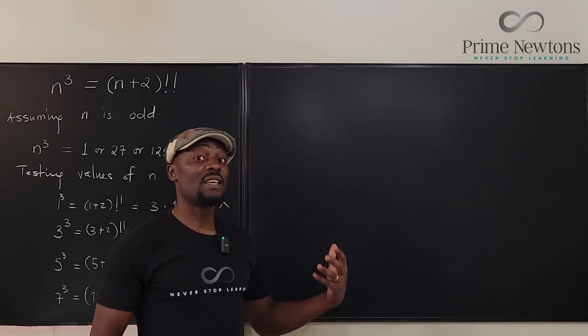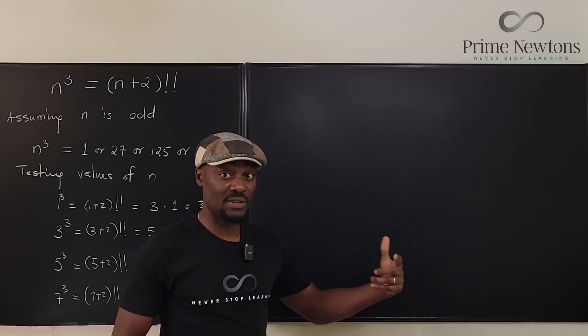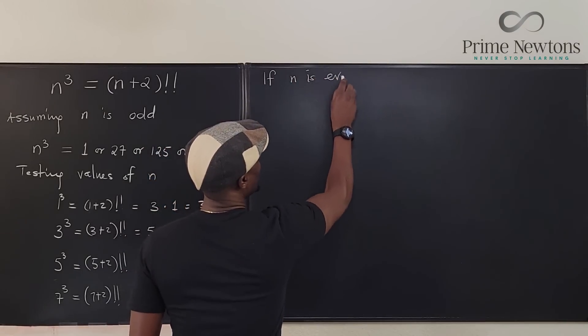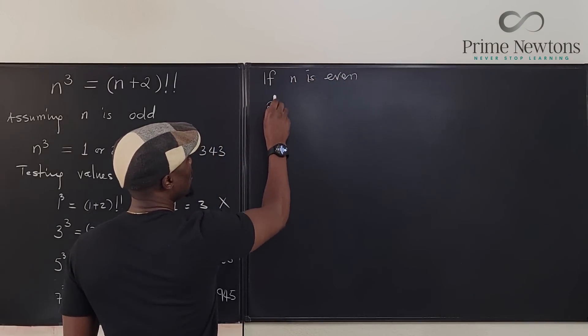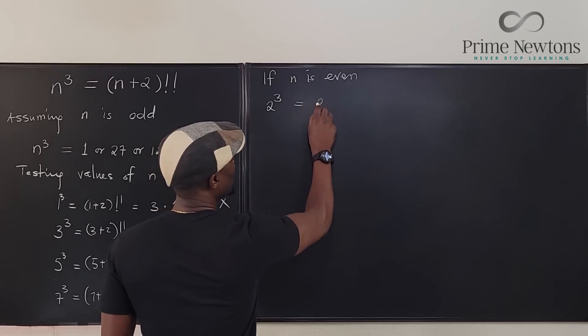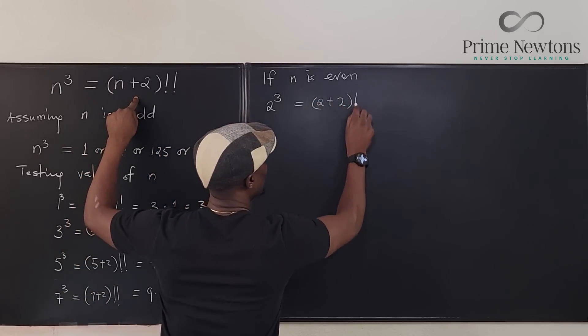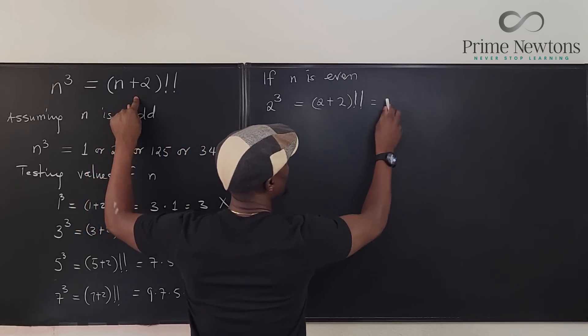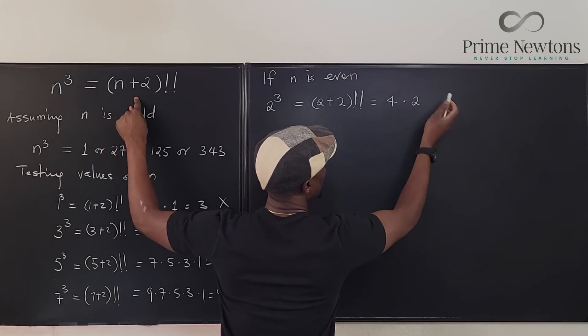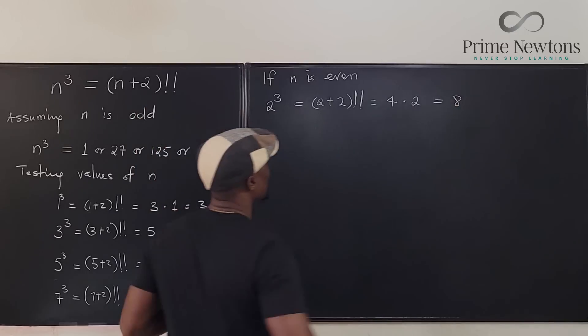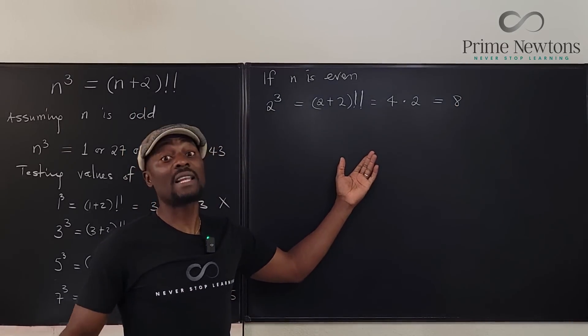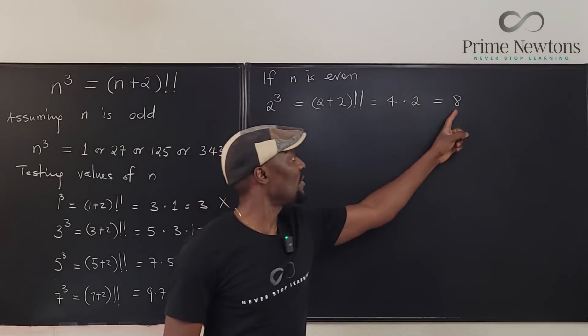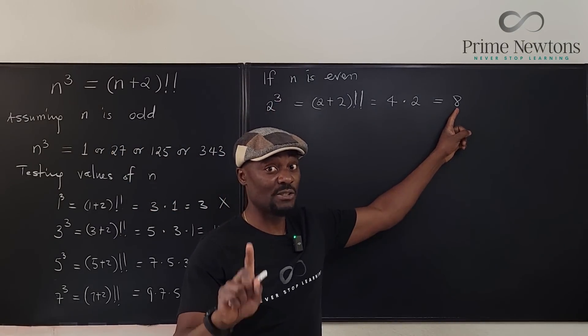So now let's see if n is an even number, and the first even number we're going to try is 2. So we say that if n is even, then we try 2. 2 cubed will be equal to 2 plus 2 double factorial. And what would that be? That would be equal to 4 times 2, and that's it, equals 8. Look, we got the answer. At least we got one of the answers, if there are more than one answers. You got 2 cubed is equal to 8. So that means n equals 2 is a solution.